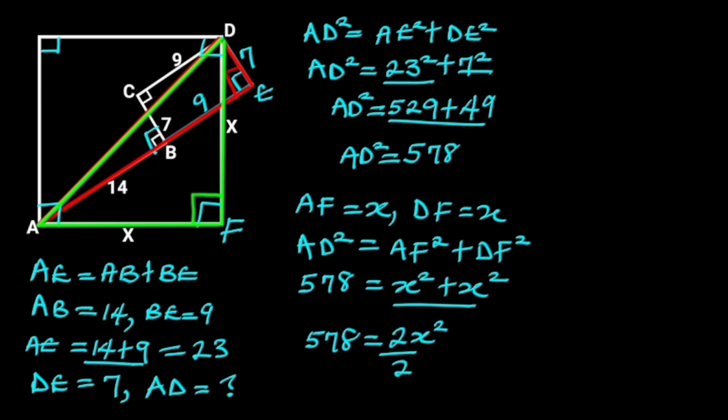Next, let's divide both sides by 2. 2 will cancel out 2, and 578 divided by 2 is 289. So, we are left with X squared is equal to 289.